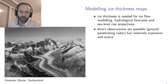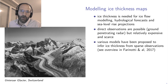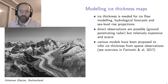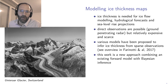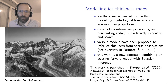Direct observations of ice thickness are possible via ground penetrating radar usually, but those are expensive and scarce — there are not many around. Various models have been proposed to infer ice thickness from sparse or almost no observations. This work is a new approach combining an existing forward model with a Bayesian inference scheme, recently published in the Journal of Glaciology. You can find it most easily via the project GitHub site.